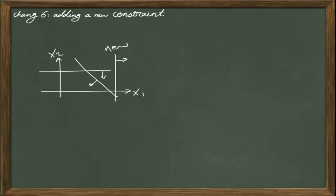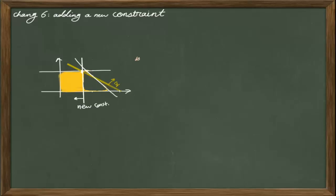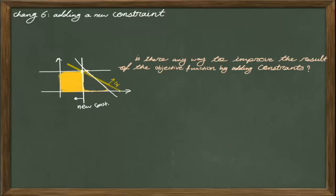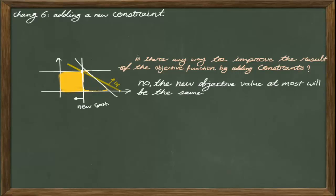So in this scenario, we are looking at condition three where adding a new constraint makes the problem infeasible. This raises the question: is there any way to improve the results of the objective function by adding constraints? As you notice, by adding a new constraint we never get to a situation where we can actually improve the result of the original problem, because every time we are adding more restriction to the feasible region and that would never result in improvement of your objective function value. Therefore, the new objective function value at most will be the same as what we had before.